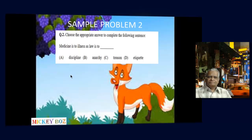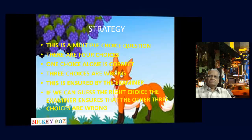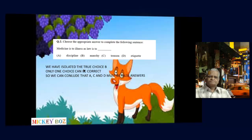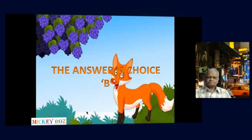Sample problem 2, question 2: Choose the appropriate answer to complete the following sentence — 'Medicine is to illness as law is to ___?' Four choices A, B, C, and D are given. Illness is something unwanted; to control illness we need medicine. Similarly, anarchy is lawlessness — a free-for-all where the law of the jungle prevails — and to control anarchy we need law. Therefore, medicine is to illness as law is to anarchy. Choice B is the right answer. Since B is the correct choice, A, C, and D must be wrong. The answer is B, which agrees with the official key.